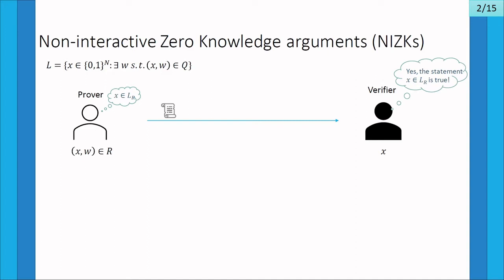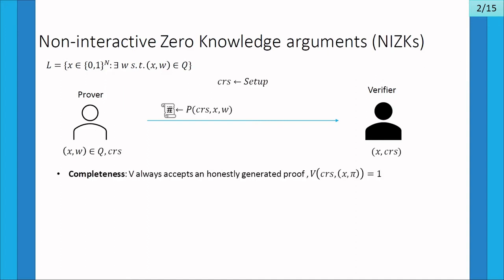In the non-interactive setting, the prover wants to do so by only sending one message to the verifier and is not allowed to further interact with the verifier. More formally, such a system has to satisfy three requirements.